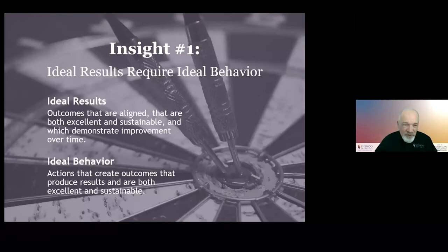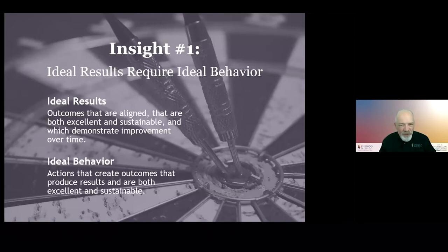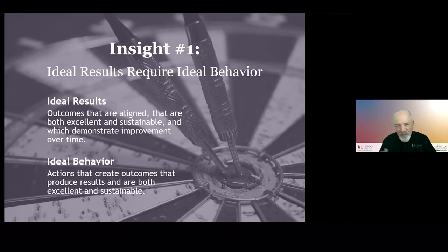In the research we did, we looked at all of the organizations that received a Shingo Prize over the first 15 years. It was really a bunch of case studies — not a controlled research methodology — but we did find some common themes. We put those themes into insights because they drove our development of the Shingo model. The first thing we noticed when talking to organizations that kept getting better even after receiving a Shingo Prize is they would say things like, 'We don't look at KPIs anymore. We look at people's actions and behaviors.'